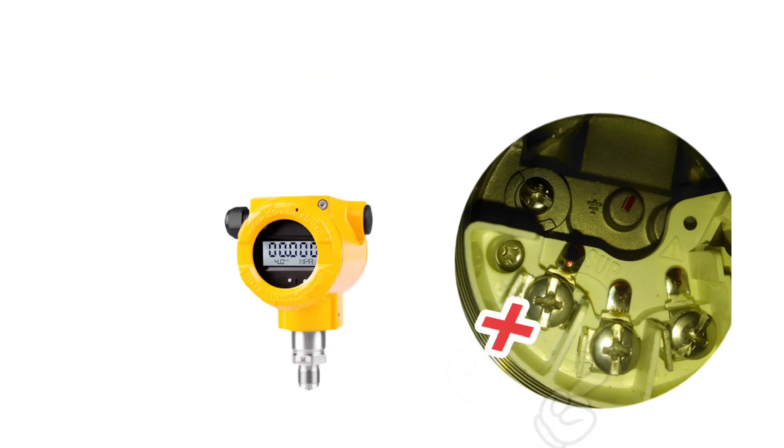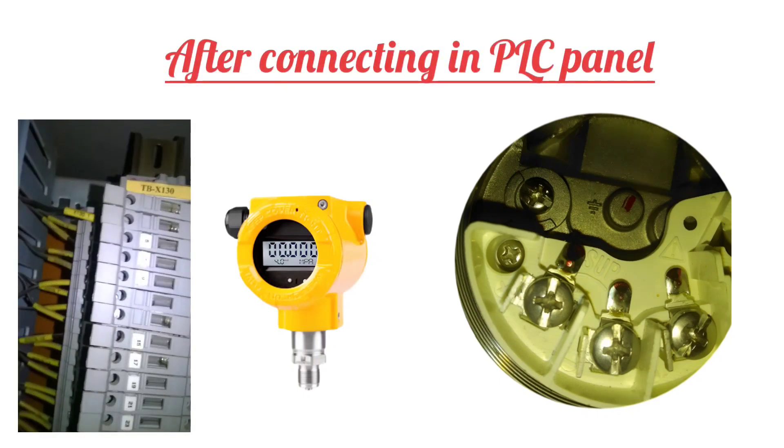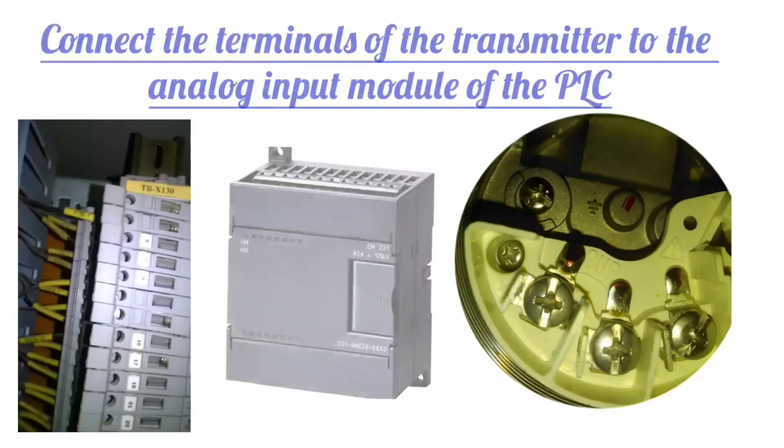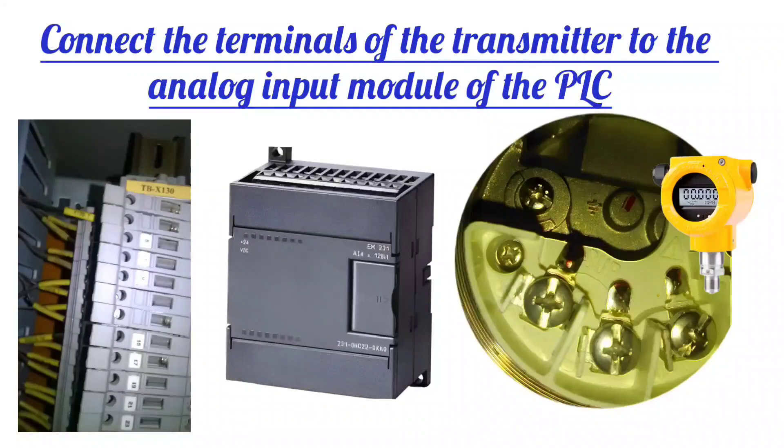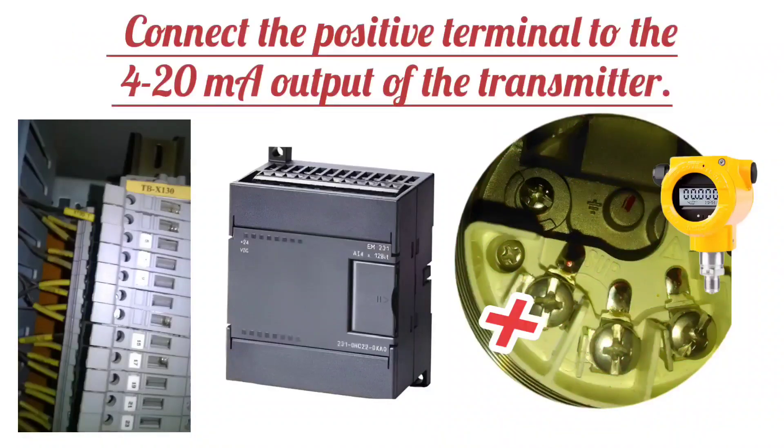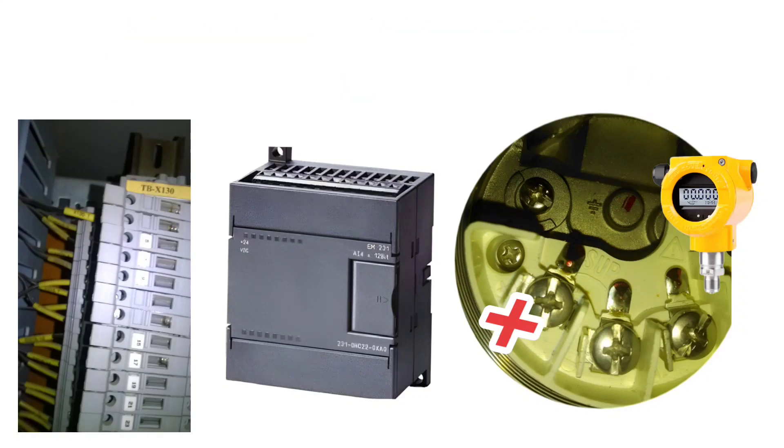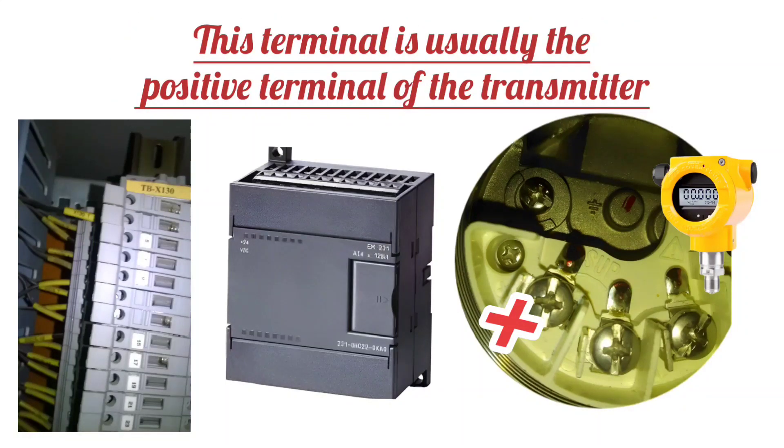After connecting in PLC panel, connect the terminals of the transmitter to the analog input module of the PLC. Connect the positive terminal to the 4 to 20 milliampere output of the transmitter. This terminal is usually the positive terminal of the transmitter.